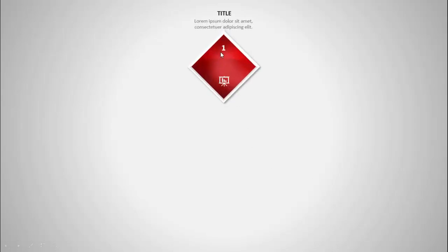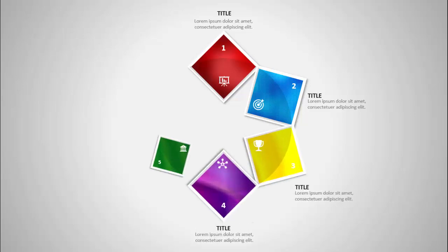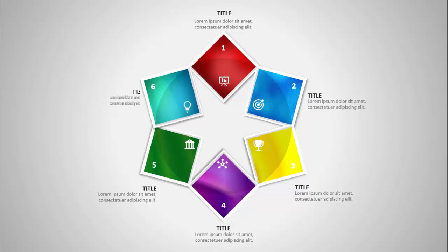In today's tutorial I'm going to show you how to create a six diamond shapes infographic slide in PowerPoint. When I click, the first diamond shape comes in — I've added the icon and the option number. At the top I've added the title and the detailed text along with some shadow effect. Then comes option 2 with a different color combination, then option 3, option 4, 5, and option 6.